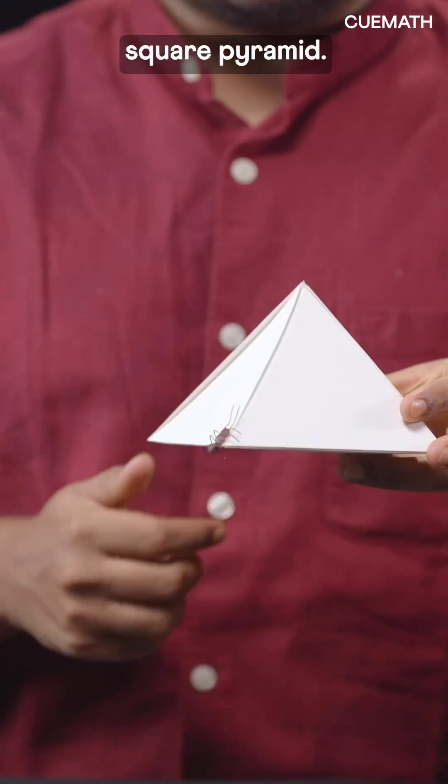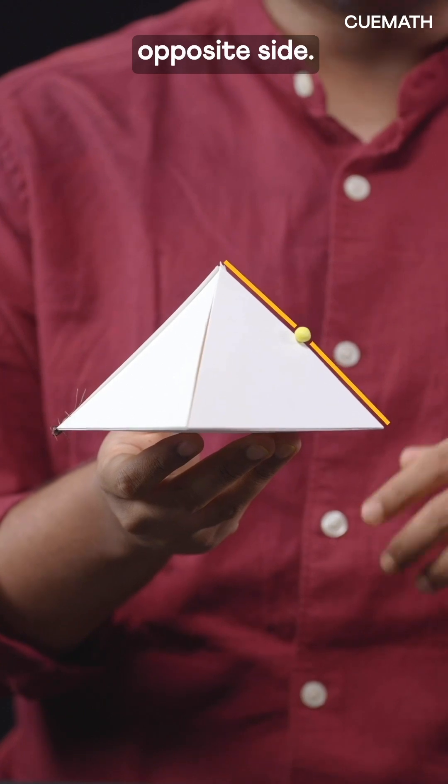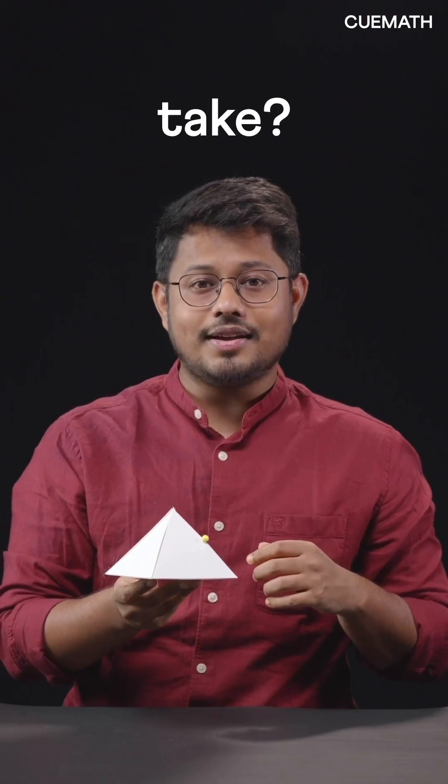An ant is at the corner of a square pyramid. It needs to crawl to the drop of honey present in the middle of the opposite side. What's the shortest path it can take?